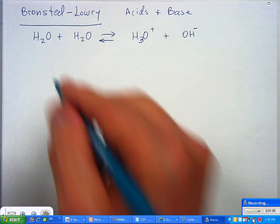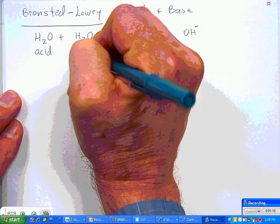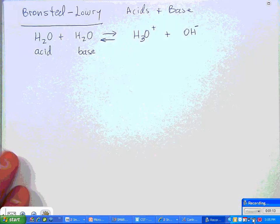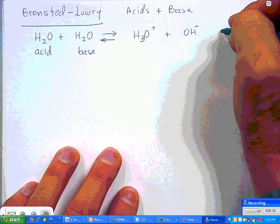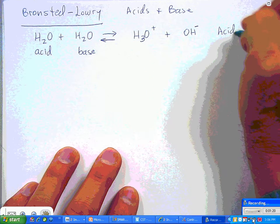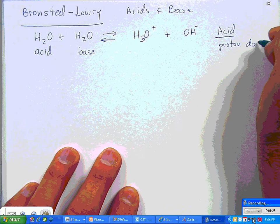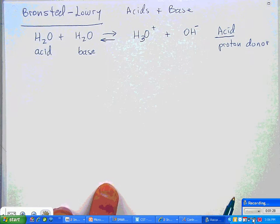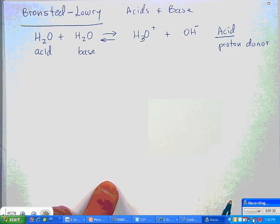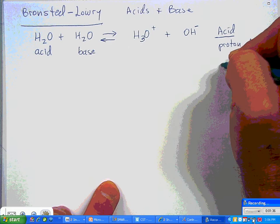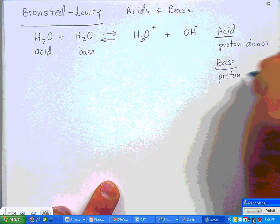Now, with Bronsted-Lowry, we have acids and bases, but not the way you normally think of them. This guy is going to be an acid, and this guy is going to be a base. And according to Bronsted-Lowry, an acid is a proton donor. And what is a proton but just a poor little hydrogen that lost his electron? This electron has gone astray. And a base is a proton acceptor.